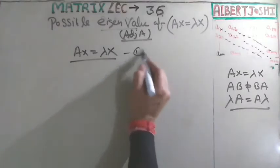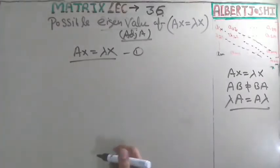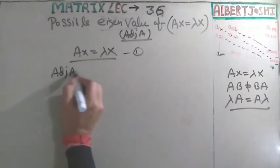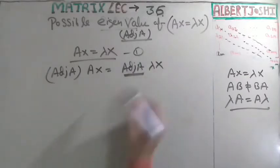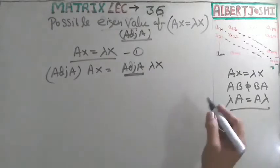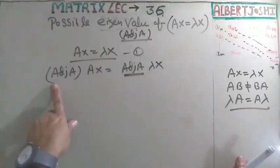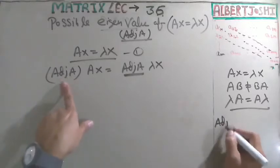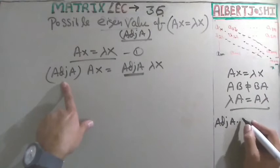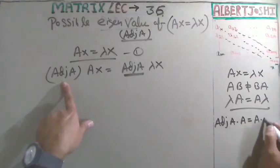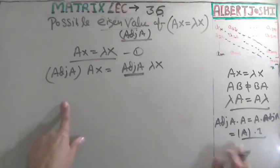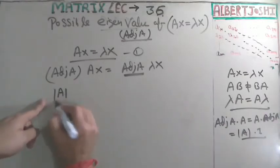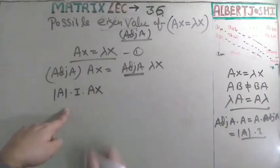The basic property to find the eigenvalues is Ax = λx — this is equation number one. Now, in place of A, if you multiply both sides by adjoint of A, you get: adjoint of A times λx. Adjoint of A is also a matrix. We have discussed the property that adjoint of A times A equals A times adjoint of A, which equals determinant of A times I. So this gives us determinant of A times I times Ax.